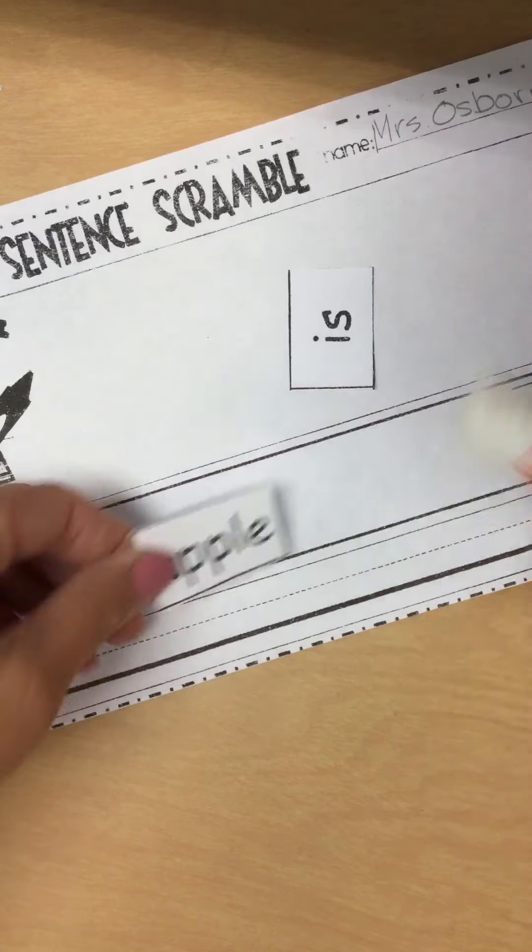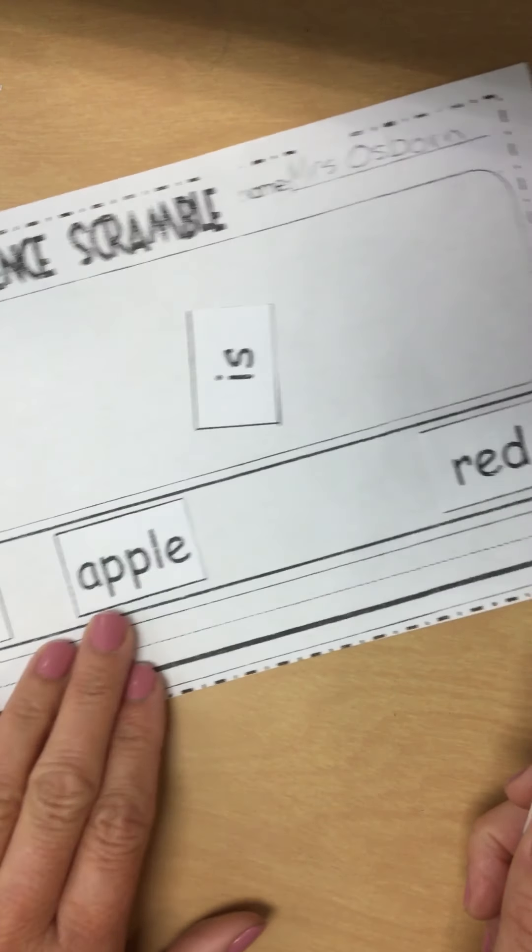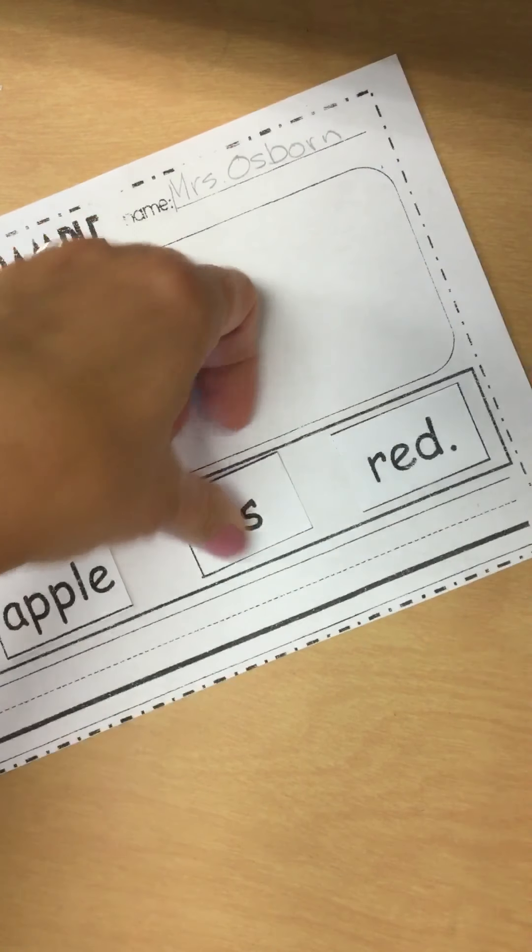That's right. That apple and then what's my, that apple is, a little spot of glue, red. Okay,